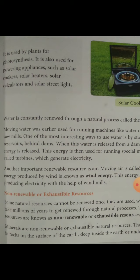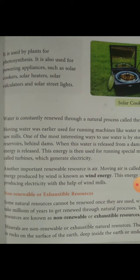Fertile soil needs water to grow plants, and plants need water to make their food. Water is constantly renewed through a natural process called the water cycle.